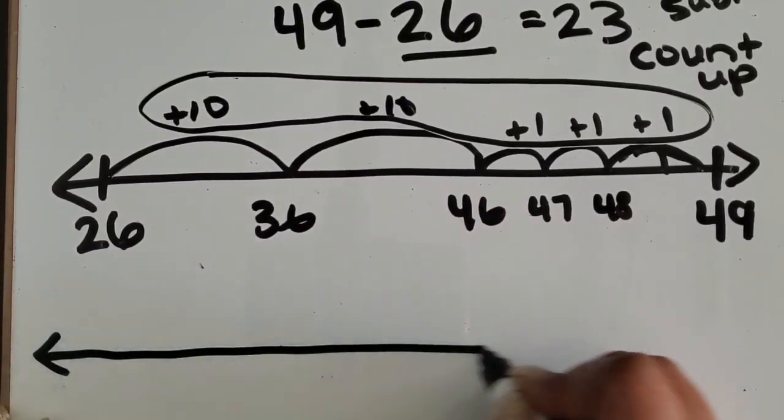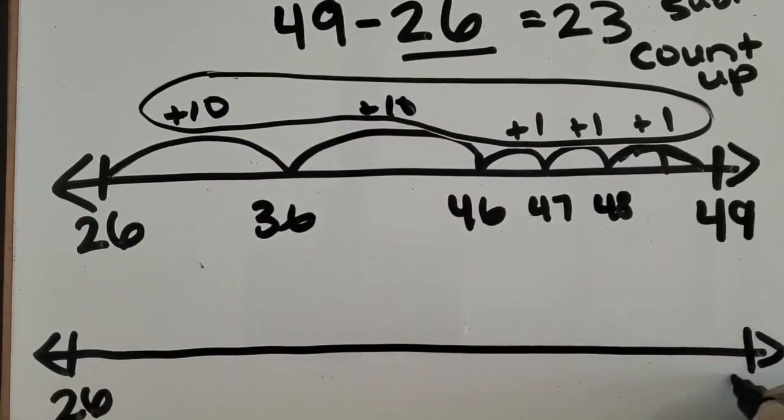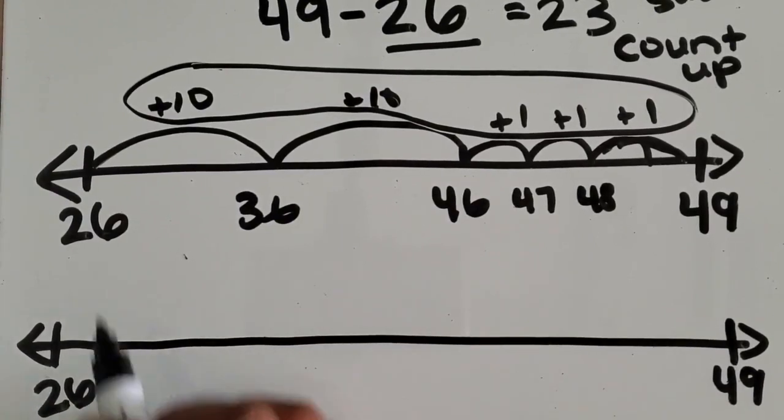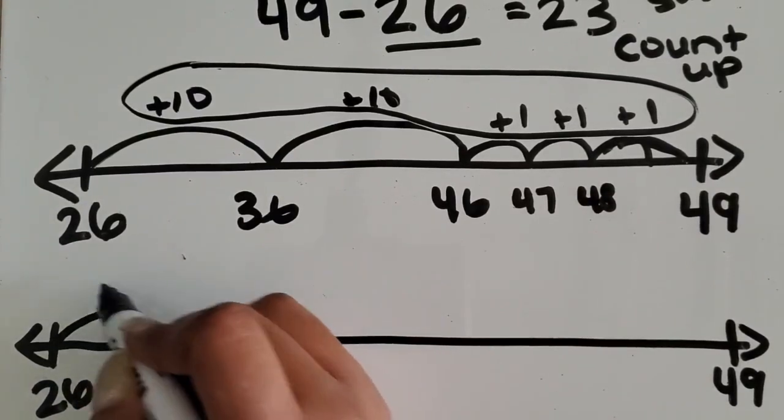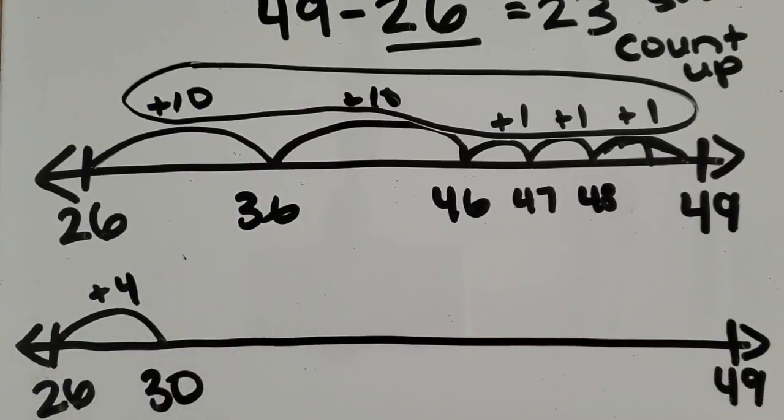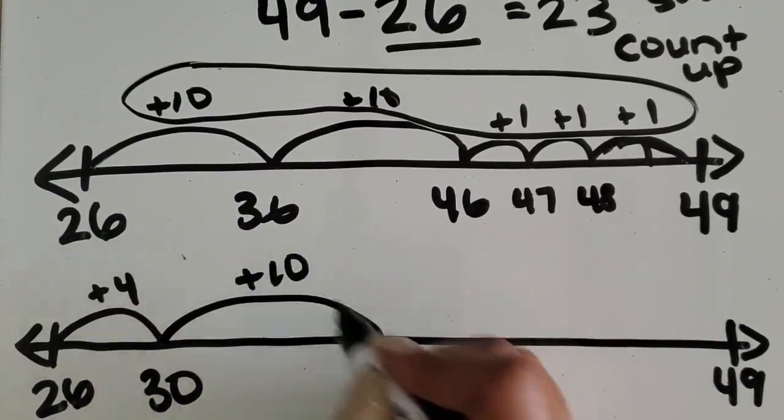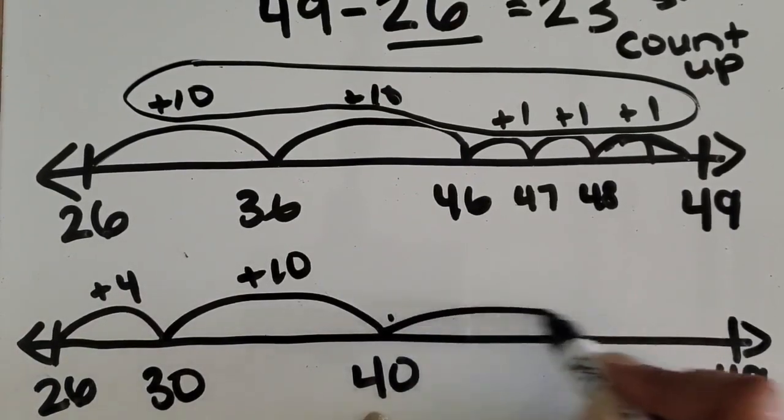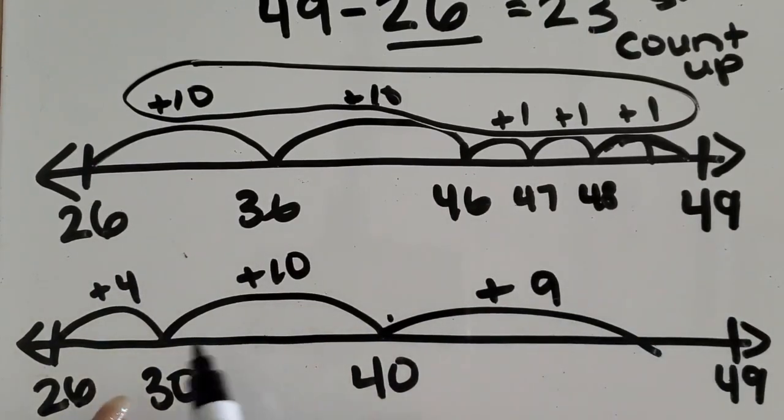Same numbers. Starting with 26. We're going to stop at 49. What is the difference in between? I can go up to... I like to get to 10s. I can count up by 4 because I know if I add 4, that'll give me 30. If I get to 50, that's too far. If I add 10, that will get me to 40. Then from 40 to 49... If I just add 9, that gives me 49.